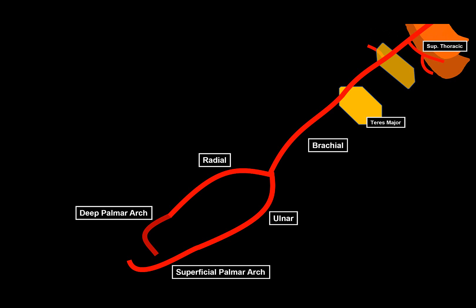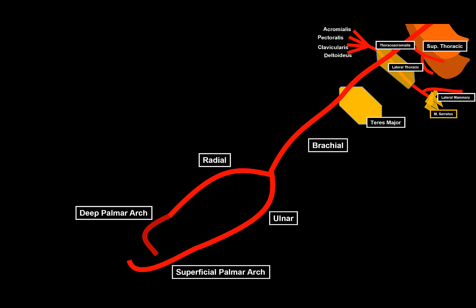The second part has two side branches. First is the thoracoacromial artery, which splits into four branches — remember the mnemonic APCD: A for acromial, P for pectoral (supplying the pectoralis muscle and mammary gland in females), C for clavicular (supplying the subclavius muscle), and D for deltoid (supplying the deltoid and pectoralis major). The second branch is the lateral thoracic artery, supplying the anterior serratus muscles, and in females it also gives off lateral mammary arteries for the mammary glands.